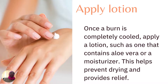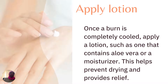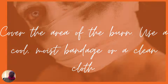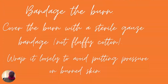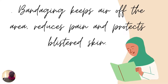You can apply anything that is cooling to the area — a lotion, aloe vera gel, or vaseline. This helps to prevent drying and provides some relief. Cover the area of the burn. Make sure you don't use fluffy cotton, as this may leave debris in the burn. Wrap it loosely with a sterile gauze bandage to avoid putting pressure on the burnt skin. Bandaging keeps air off the area, reduces pain, and protects the blistered skin.